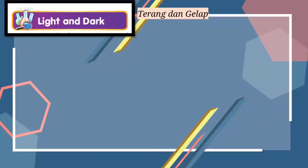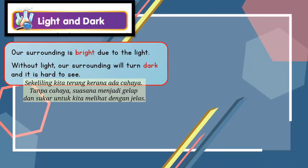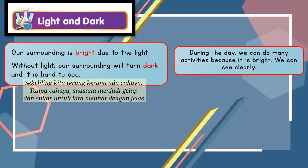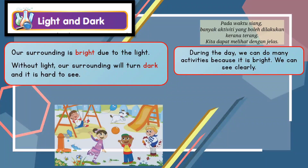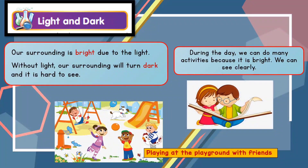Light and Dark — Terang dan gelap. Our surrounding is bright due to the light. Without light, our surrounding will turn dark and it is hard to see. During the day, we can do many activities because it is bright and we can see clearly. We can play at the playground with friends, and because it is bright, we can also read.